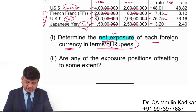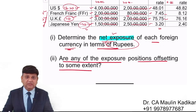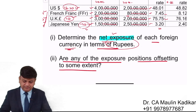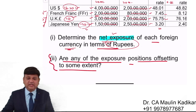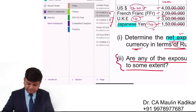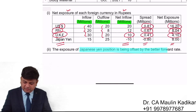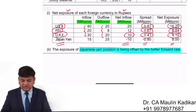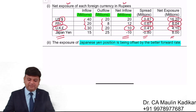The second question asks: are any of the exposure positions offsetting to some extent? We understand that some exposure is being set off. In the case of Japanese Yen, yes — the exposure of the Japanese Yen position is being offset by the forward rate, i.e., by a better forward rate. In the same Japanese currency, we had to make a payment, and in that case the rupee currency is appreciating. That is the reason we get an advantage.